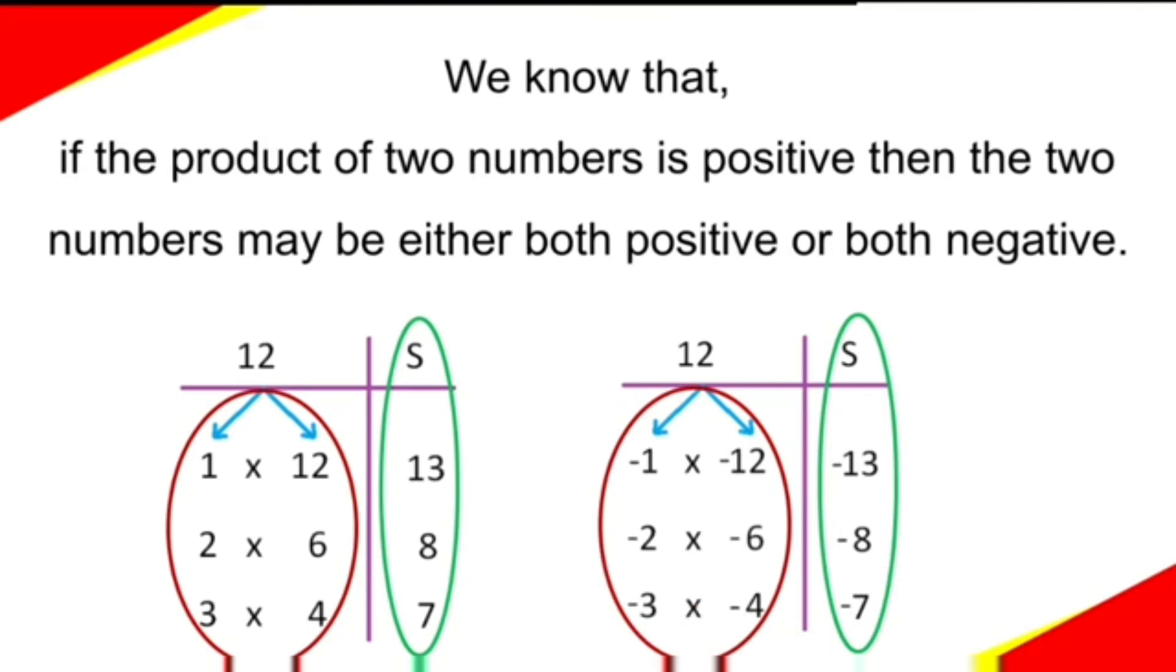Now, can you select the two numbers whose product is +12 and sum is +7? Yes, obviously, the two numbers are 3 and 4.